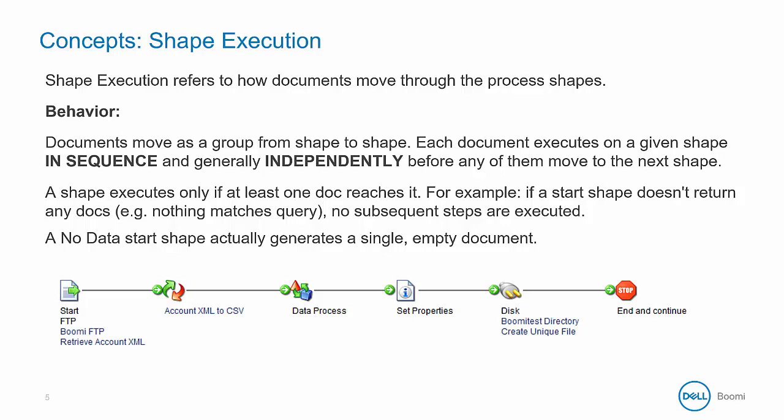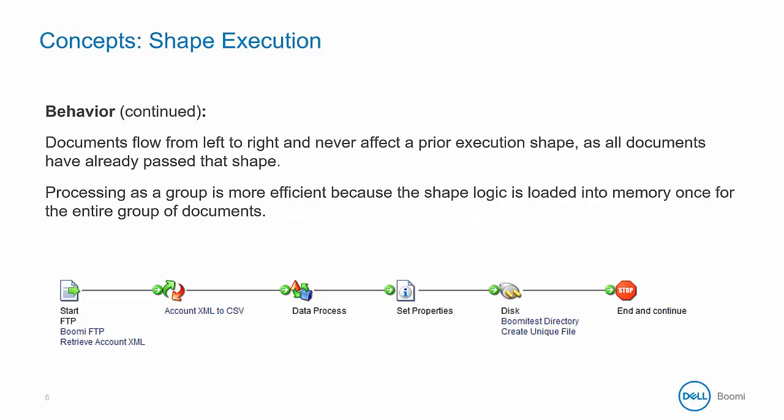The documents move together from one shape to another and wait for all documents to process in that shape before moving on to the next shape together. A shape will only execute if a document flows into it. Therefore, if a start shape doesn't return any documents, then no subsequent steps are executed. Documents flow from left to right and never affect a prior execution shape, since all documents have already passed through that shape.